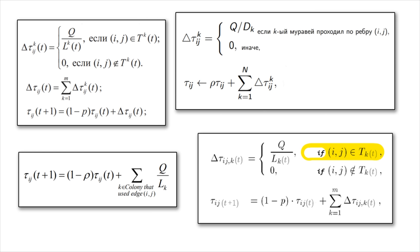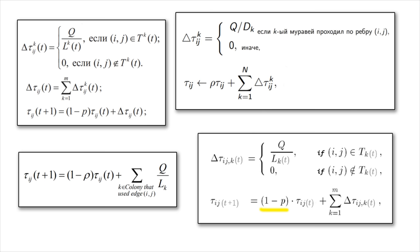The amount of pheromones on the route between city i and city j in the new iteration equals the amount in the previous iteration multiplied by the evaporation coefficient — pheromones are constantly evaporating. To that result we add the sum of all new pheromone portions that all ants have left in this area. Some authors include the remaining pheromones after evaporation in a constant; others handle it differently, subtracting from one in the formula.